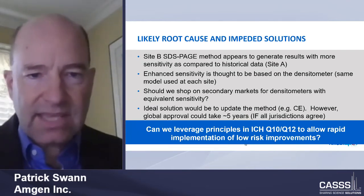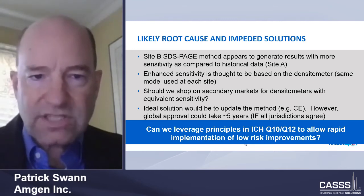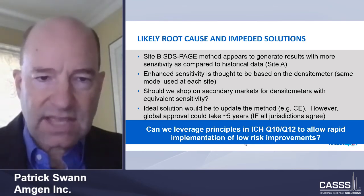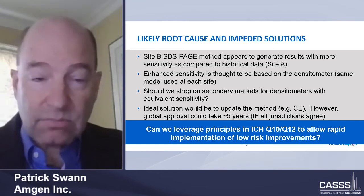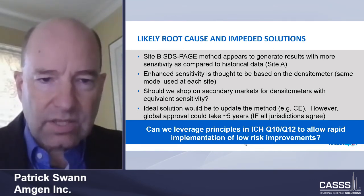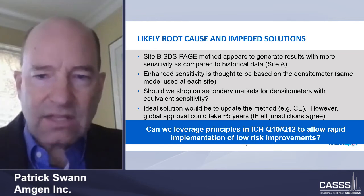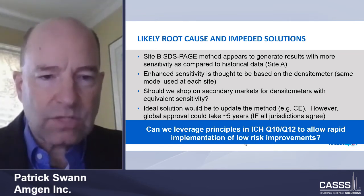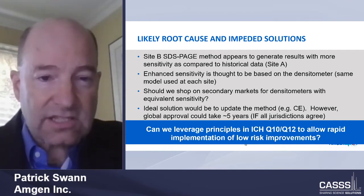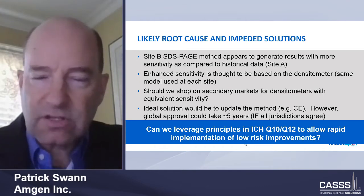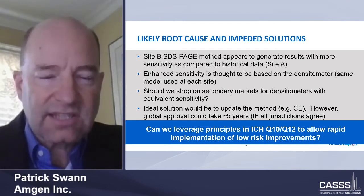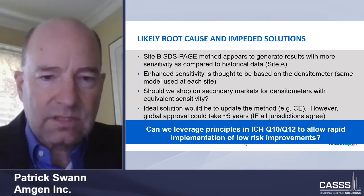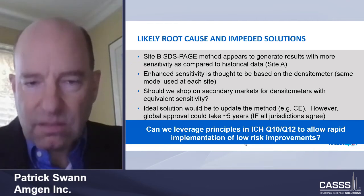The likely root cause is that site B's SDS-PAGE method appears to generate results with more sensitivity compared to historical data at site A. This enhanced sensitivity is thought to be based on the densitometer — the same model was used at each site, but given the nature of this specification, we have this particular challenge. There's no impact on quality, but it's related to the method and what's reported. One solution discussed seriously was whether we need to shop on secondary markets for densitometers with equivalent sensitivity. No one is gaining by all of this effort, since it doesn't impact product quality, but it is a significant effort to address the perceived issue relating to stability as measured by the method at site B.